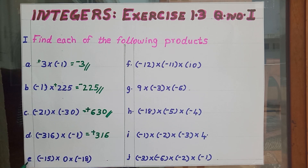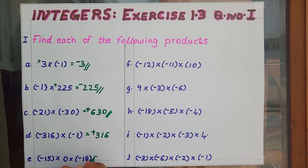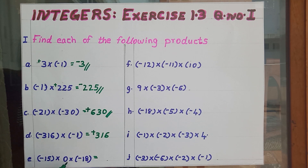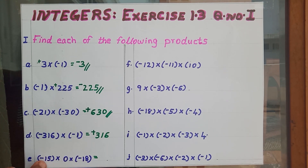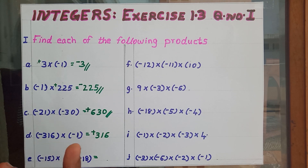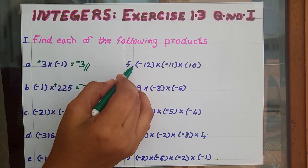Then question E: minus 15 into 0 into minus 18. Here comes 0. We know any number multiplied by 0, the answer will be 0. So just write down the answer, because whatever number you get by multiplying minus 15 into minus 18, that number should be multiplied by 0, and again the answer will be 0 only. So the answer is 0.